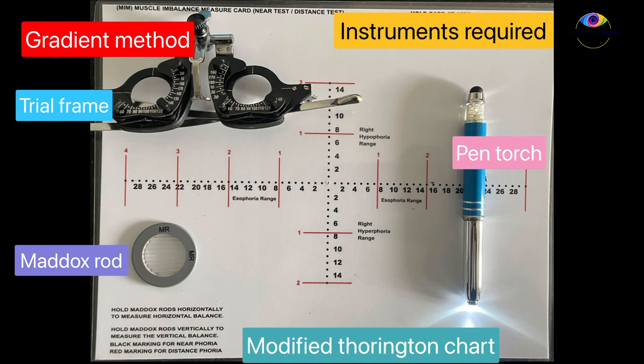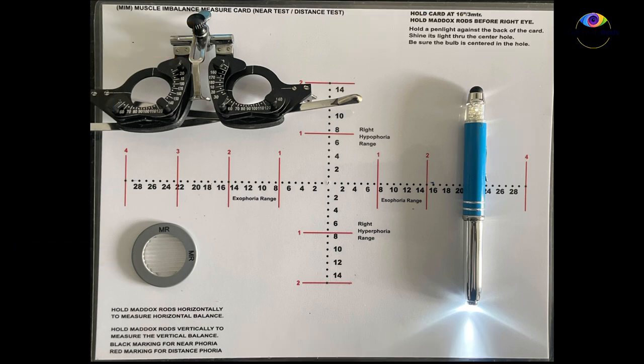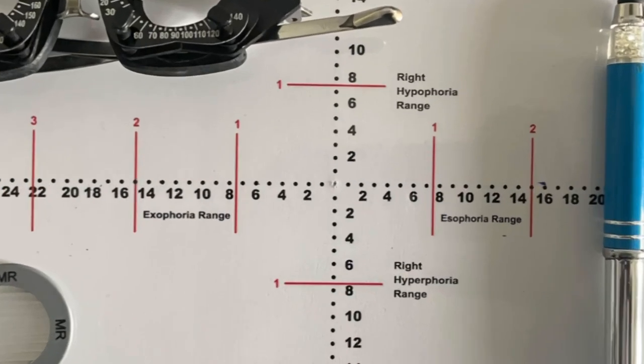In gradient method, you just require a pen torch, Maddox rod, a trial frame, and a modified Thorrington chart. This modified Thorrington chart is a simple chart which indicates the various types of phorias present in the eye.